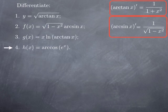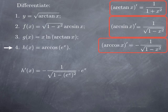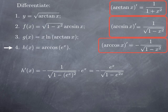Finally, we differentiate arcsin(eˣ) — we're plugging eˣ into the arcsin function, so we use the chain rule. The derivative of arcsin is negative 1 over square root of 1 minus x squared. Plugging in eˣ, we get negative 1 over square root of 1 minus e to the x squared, then multiply by the derivative of eˣ, which is eˣ. Since eˣ squared is e to the 2x, we can rewrite that as negative eˣ over square root of 1 minus e to the 2x.